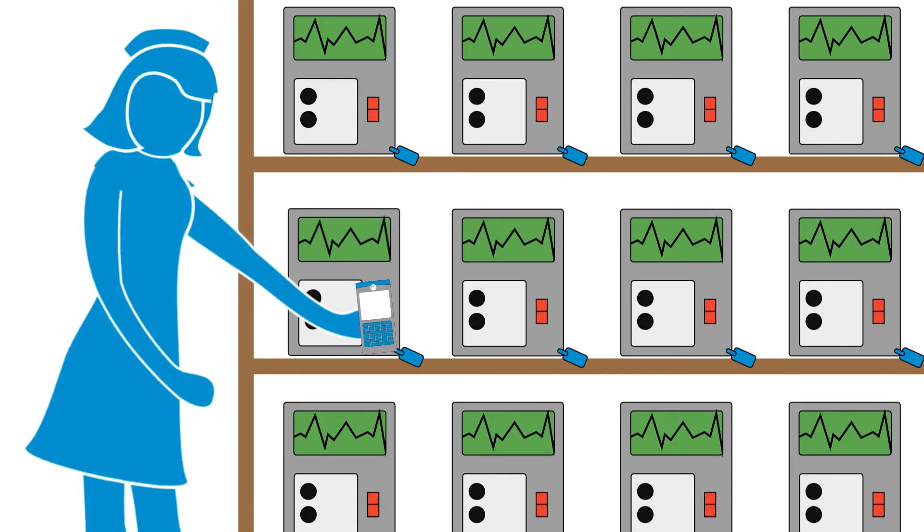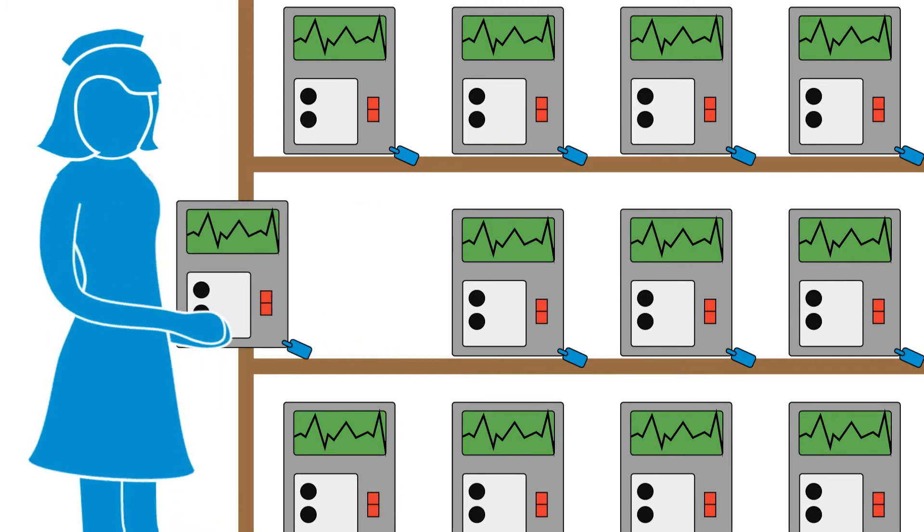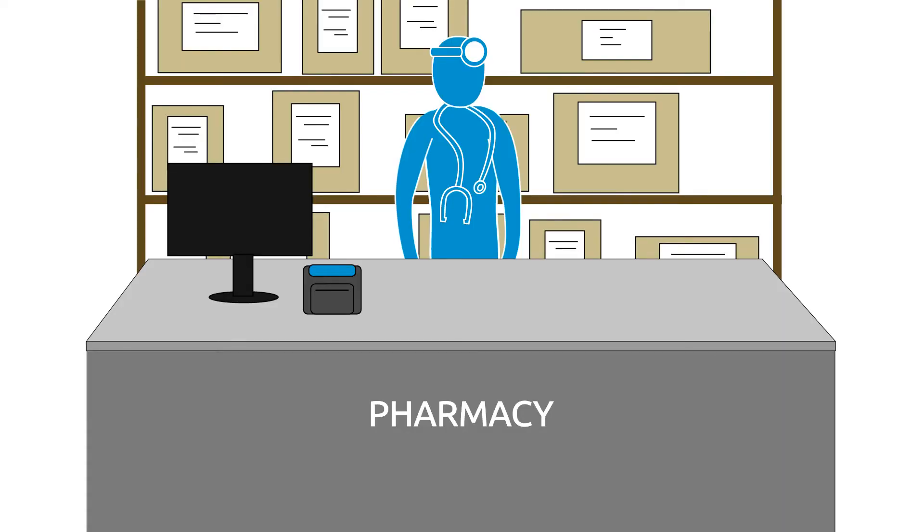Track medical equipment with 1D or 2D barcode labeling or RFID tagging, which reduces time wasted by medical staff looking for equipment. Track medication through a prescription labeling barcode system over a Wi-Fi infrastructure.